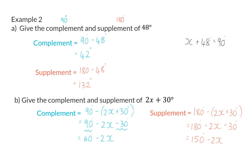You can always test your answer. If you take the original angle of 2x plus 30 degrees and add its supplement of 150 degrees minus 2x, you will see that 2x minus 2x is 0 and 30 plus 150 gives you 180 degrees.